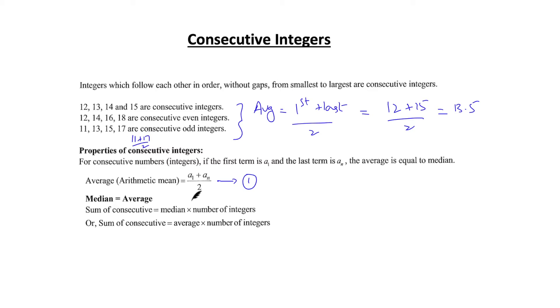The second most important thing is that for a consecutive series, median equals average. The third is that the sum of consecutive integers is basically average into number of integers, or median into number of integers because mean equals median. So these are the three most important things you should remember whenever we are talking about consecutive integers.